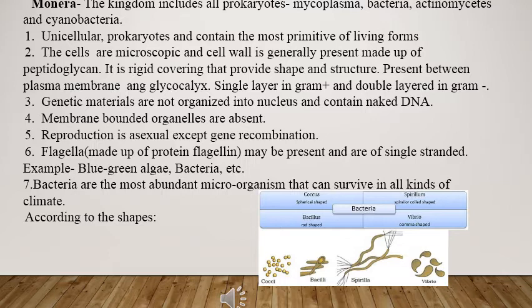As it is a prokaryote, the genetic material is not organized because of the absence of the nucleus membrane. So the DNA, deoxyribonucleic acid, the genetic material is seen naked in Monera. The membrane bound organelles are absent. For example, the ribosomes present here are of 70S unit, whereas organelles like endoplasmic reticulum and Golgi bodies are absent in it.